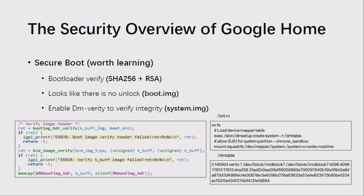Through analysis of the firmware and related resources, we believe the security mechanisms adopted by Google Home are worth learning. Regarding secure boot on IoT devices, the bootloader, boot image, and system image are protected by security mechanisms throughout the boot process. The bootloader and boot image use signature verification, and there is no logic to provide unlocking. In addition, Google Home also enforces dm-verity integrity on the system image.